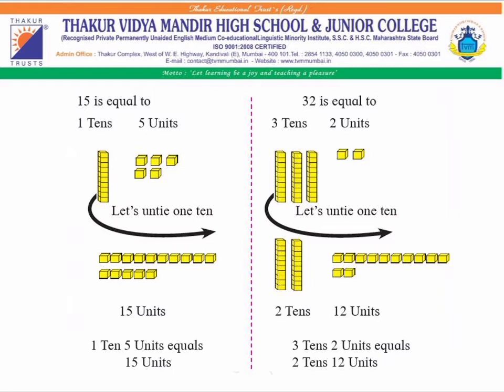You can see here: 32 is equal to three tans and two units. Let's untie one tan. If we remove one tan, we will get two tans and 12 units. So, three tans and two units equals two tans and 12 units.